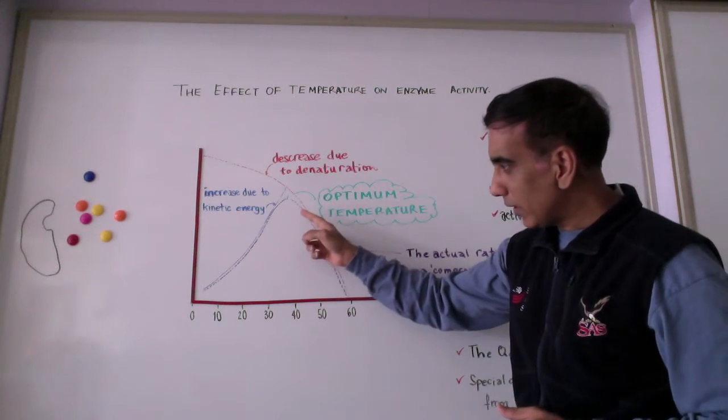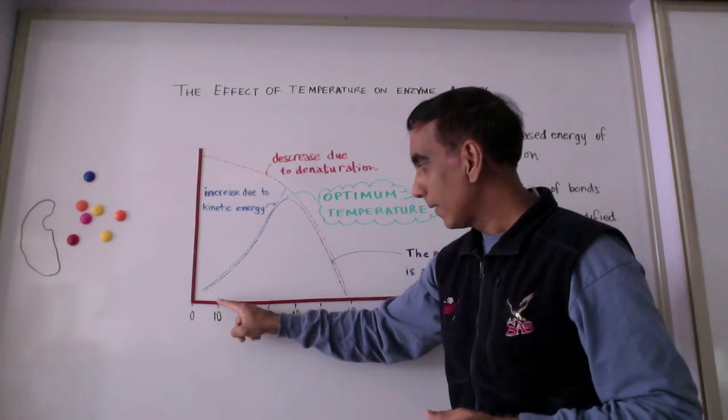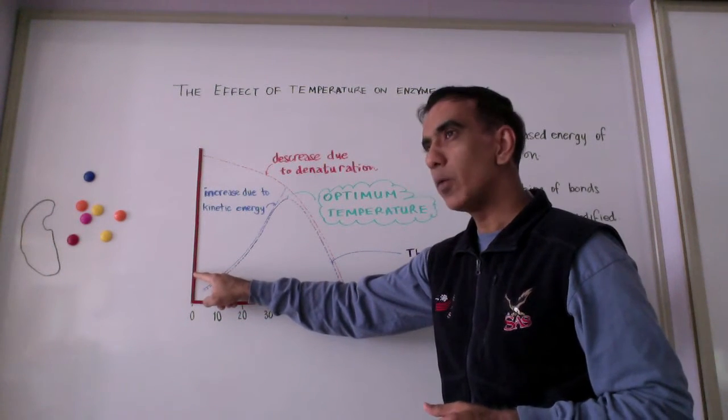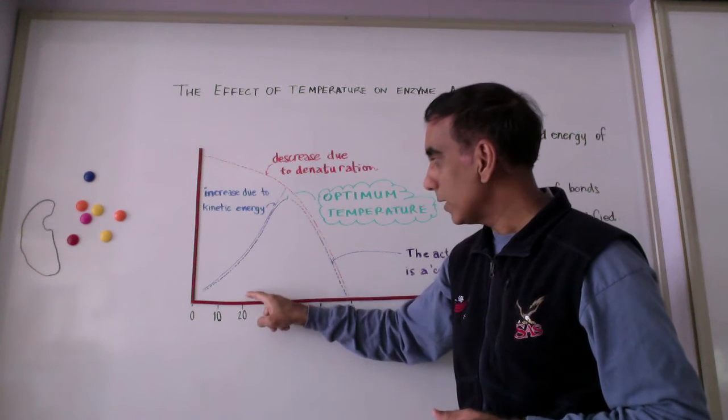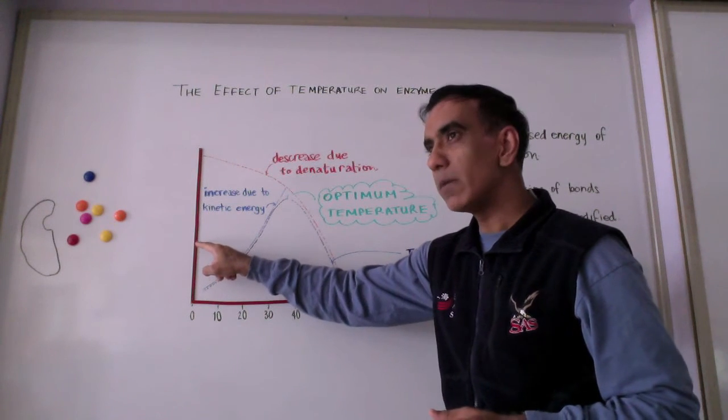Here you can notice also an interesting fact about enzymes. At 10 degrees Celsius the rate might be one unit, but at 20 degrees Celsius the rate might be two units. At 30, a doubling again to four units.